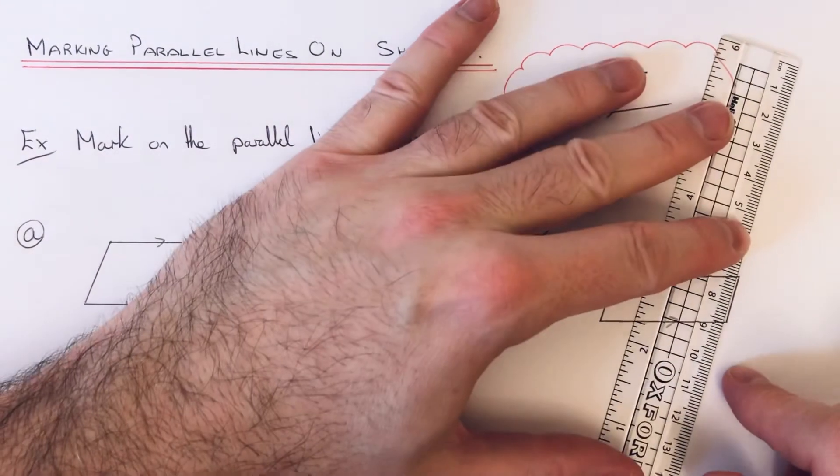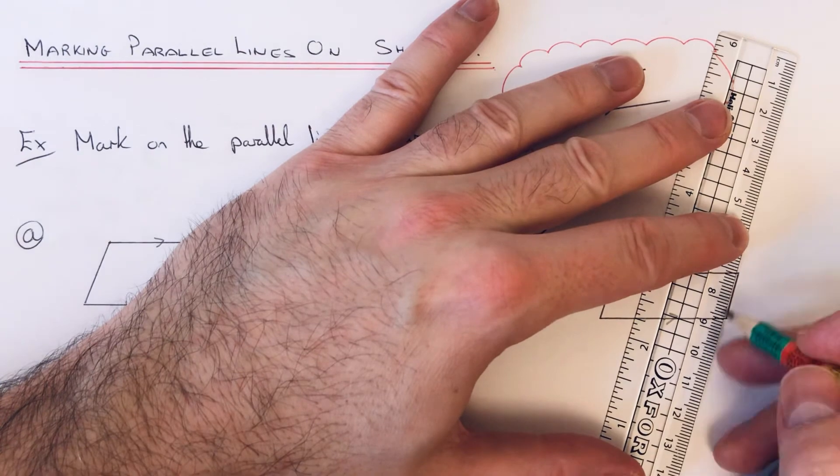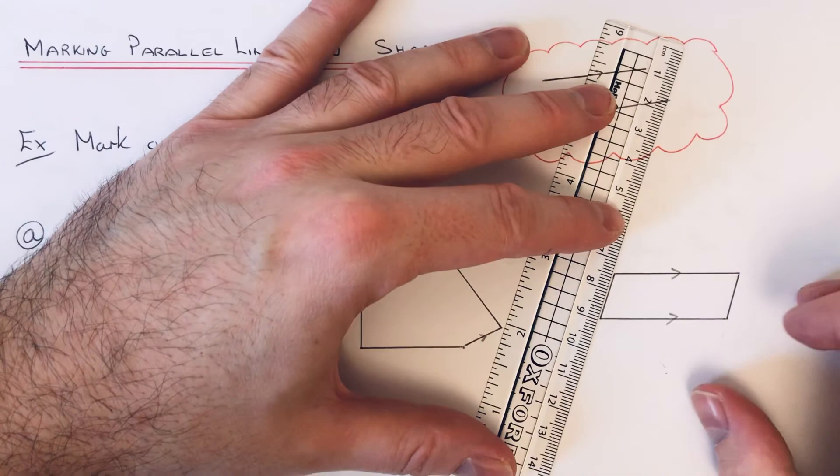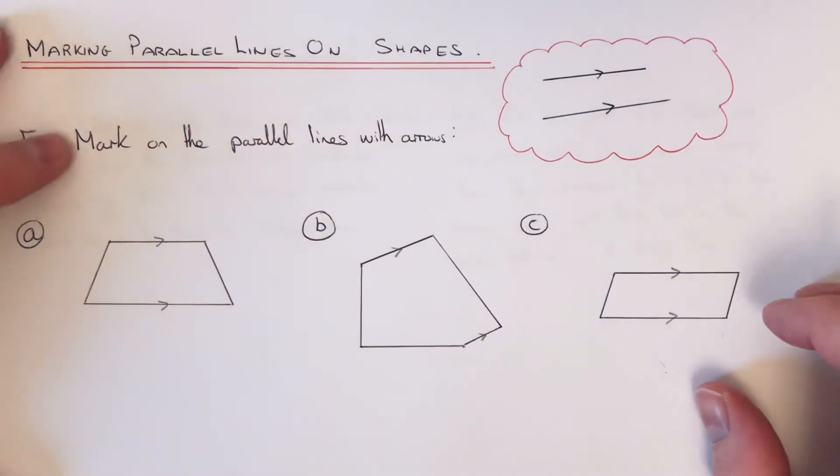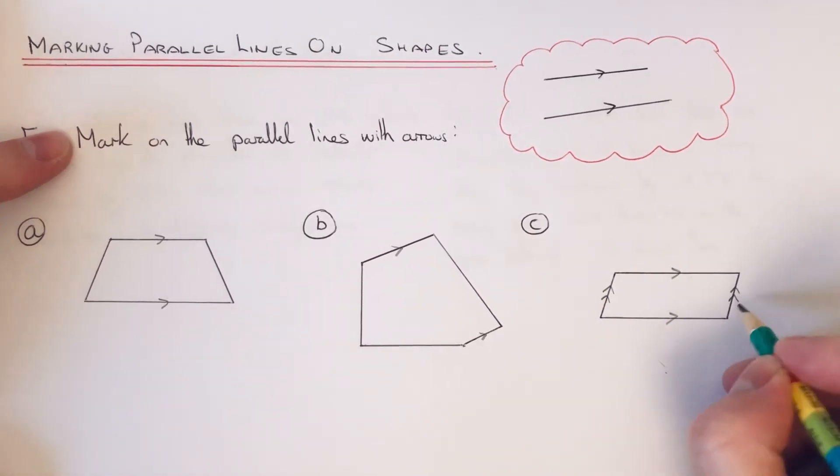And let's check if these are parallel. So you see we've got a line heading in that direction, and if you just move it to the other one you can see it's heading the same way. So we have a second pair of parallel lines, so we can mark these with a double arrow this time to show that they're different from the first pair.